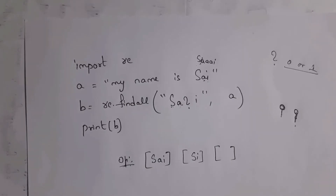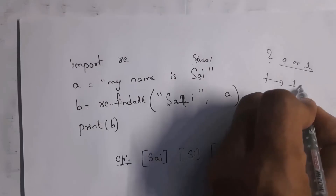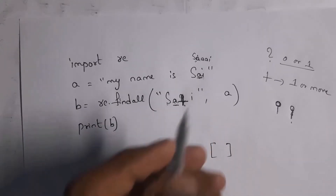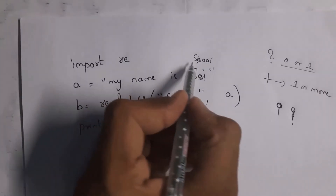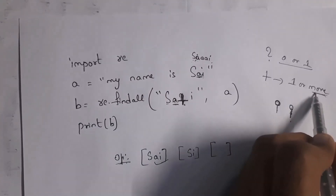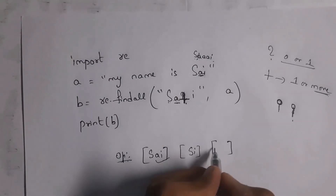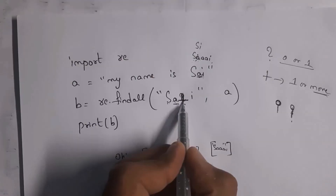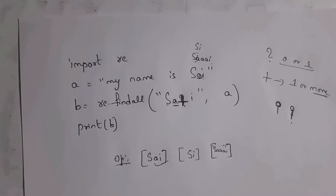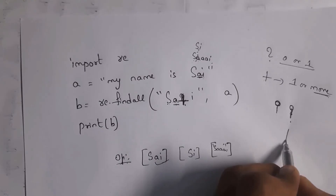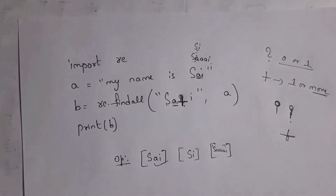The plus symbol means one or more occurrence. With pattern 'Sa+i' and string 'Sai', A is present once so condition is satisfied and output is 'Sai'. If A is repeated three times (like 'Saaai'), condition is still satisfied because one or more is met, so output is 'Saaai'. But if A is not present at all (string 'Si'), I won't get any output — plus requires at least one occurrence.